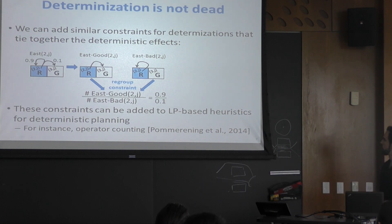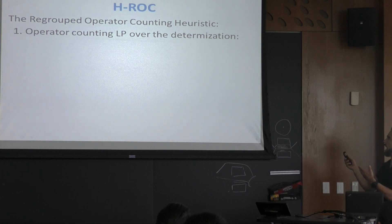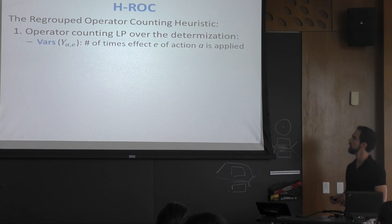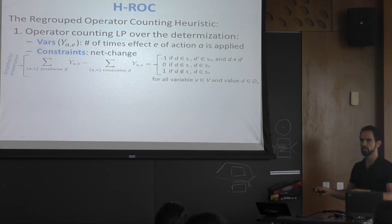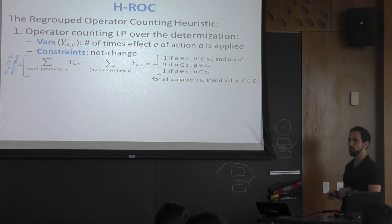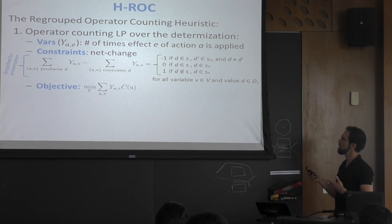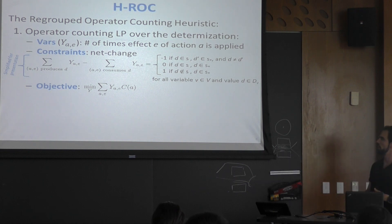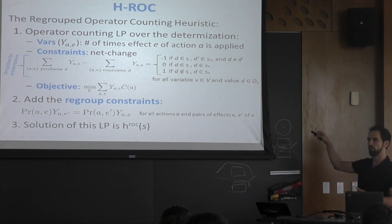That's exactly what we did. We used the operator count heuristic from Florian, and we call this the Regrouped Operator Count heuristic, or H-ROC. We have the operator count LP over the determinization — variables are the number of times every effect is executed. We have linear constraints: if you need to produce something you have to do it; if you lose it, you have to redo it. The objective function is similar to H-POM, plus the regrouping constraint enforcing the probability ratios.